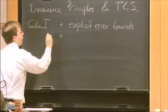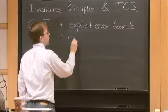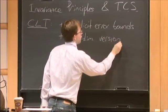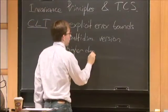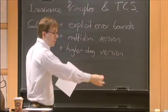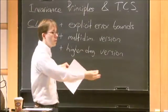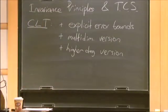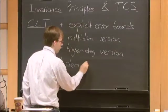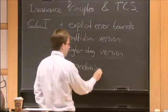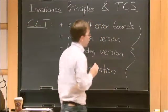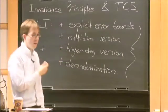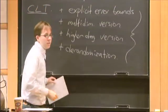So you get the central limit theorem with explicit error bounds, which is something we really want in theoretical computer science — we don't really care about limiting statements. You can also prove a multidimensional version where the random variables are vector-valued, a higher degree version where you plug independent random variables into a low degree polynomial, or a derandomized version useful for pseudorandomness. I like this proof because once you get the basic idea, you can get all of these extensions.